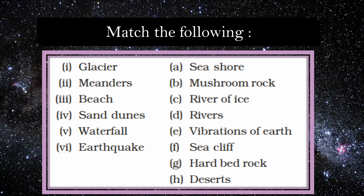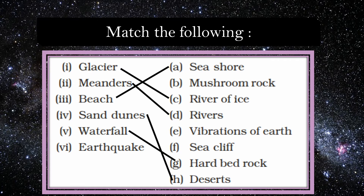Match the following. Glaciers are rivers of ice. Meanders are formed from rivers. Beaches are on seashores. Sand dunes are found in deserts. Waterfalls are made when a river falls over a hard bedrock. And earthquakes are vibrations of the earth.